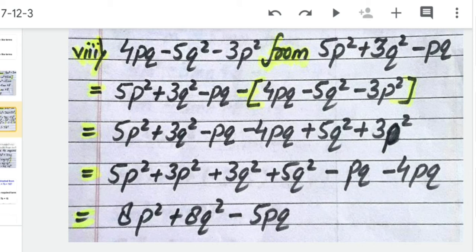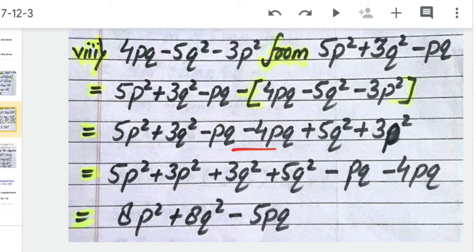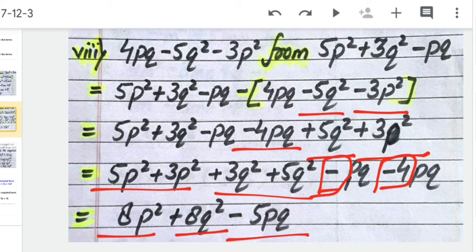The last part of Q3: subtract 4pq minus 5q² minus 3p² from 5p² plus 3q² minus pq. Put the first expression in brackets with a negative sign. Opening the bracket changes all signs: negative 4pq, positive 5q², positive 3p². Collecting like terms: 5p² plus 3p² is 8p²; 3q² plus 5q² is 8q²; and the two negative pq terms add to give minus 5pq.